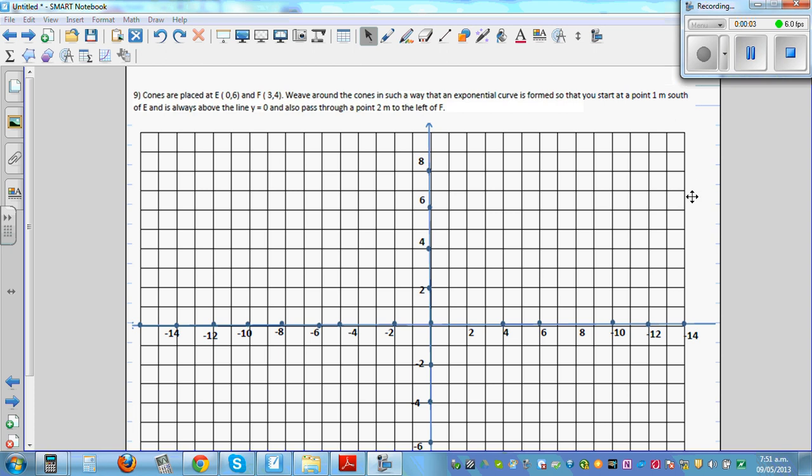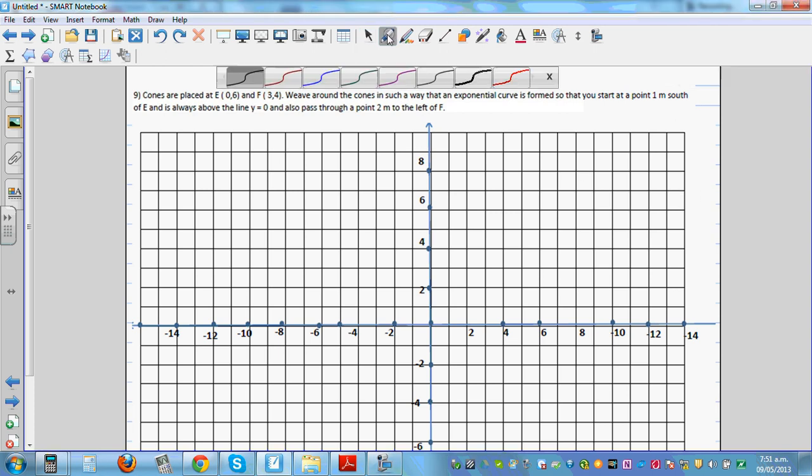Let's look at this question. Cones are placed at E, which is 0 comma 6, so your coordinate E is 0 comma 6. This is your point E, and F which is 3 comma 4.